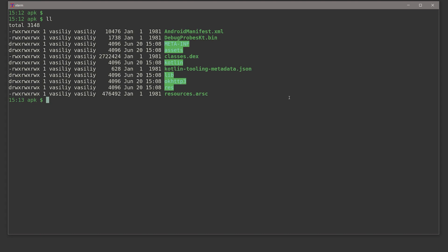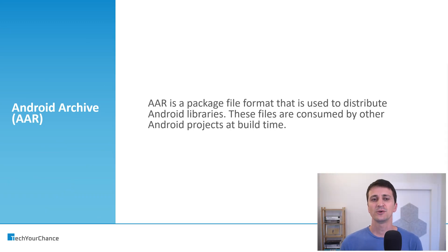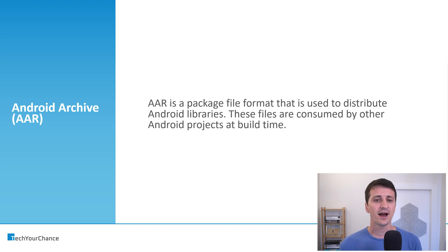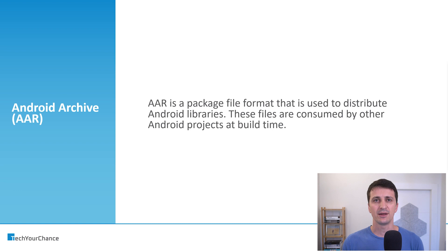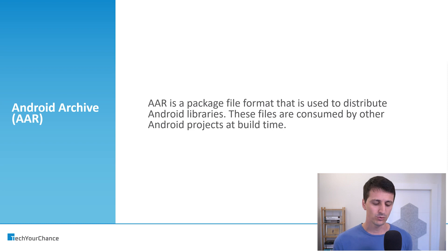Android Archive, AAR. AAR is a package file format, just like JAR or APK, that is used to distribute Android libraries. This format is specifically designed for Android libraries. These files are consumed by other Android projects at build time. Unlike JAR files in the Java ecosystem — which can contain either full applications or libraries — in Android, AAR files cannot contain applications; they are there just for distribution of Android libraries.